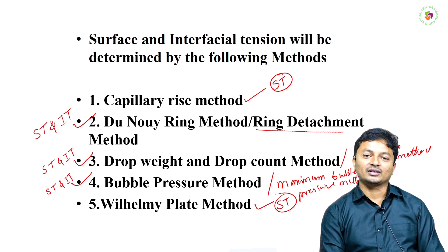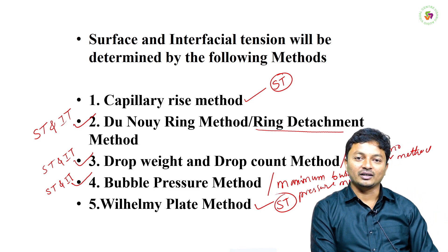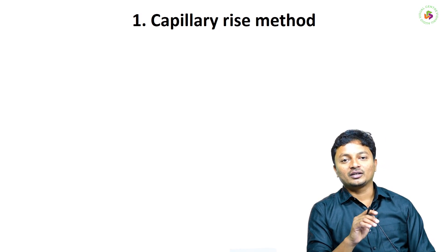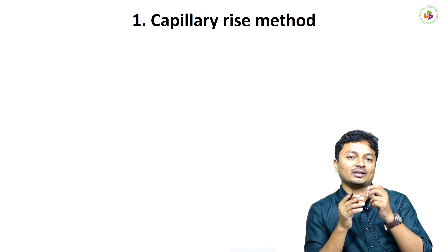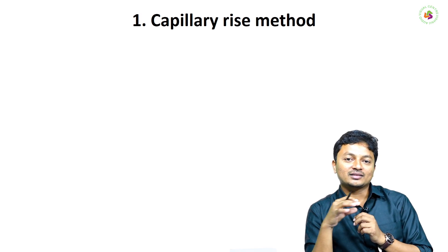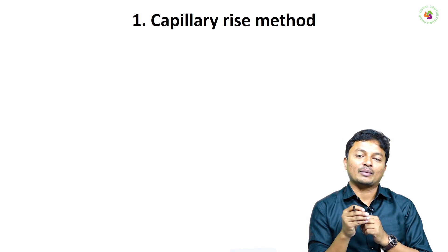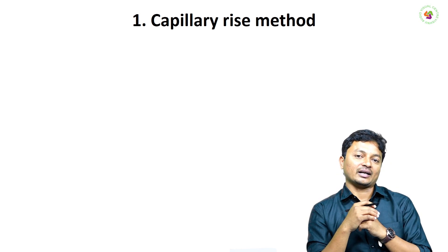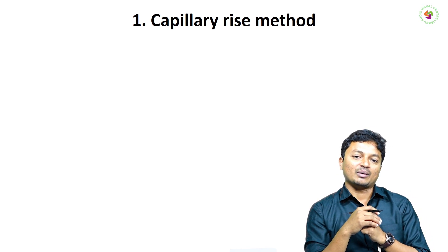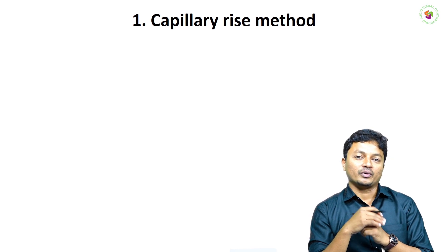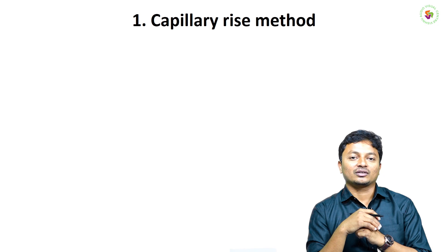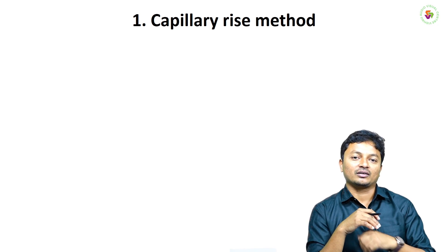Let us discuss these different methods in detail one by one. The first one is the capillary rise method. In this method, we will be having a capillary, and due to surface tension the sample will rise in the upward direction. When the countering force acts on the same liquid sample, it will stop. Thus, we can determine the surface tension of the particular sample.